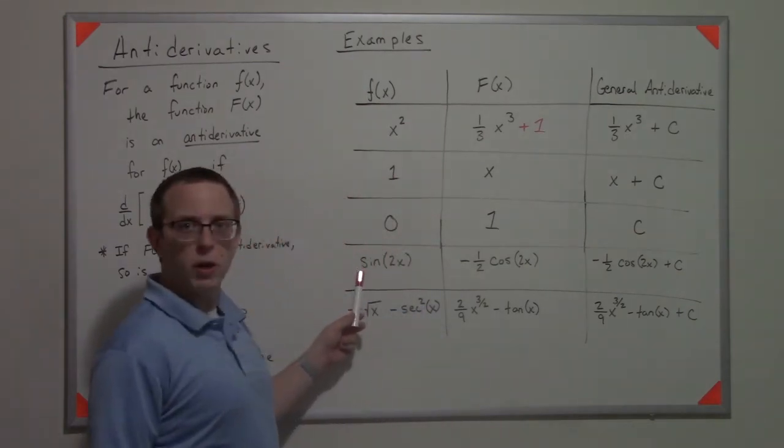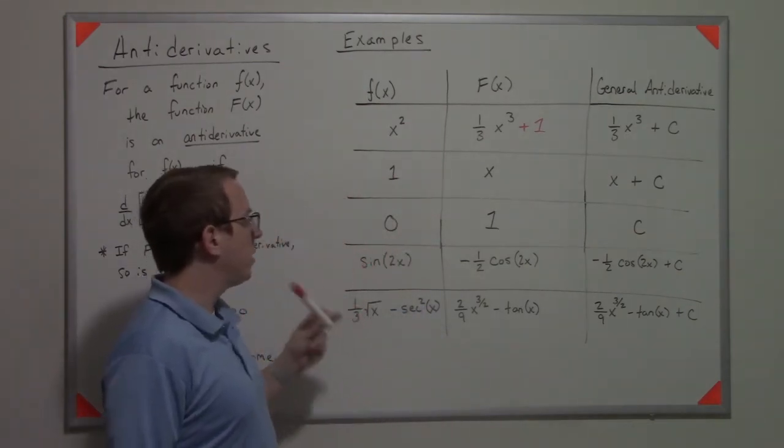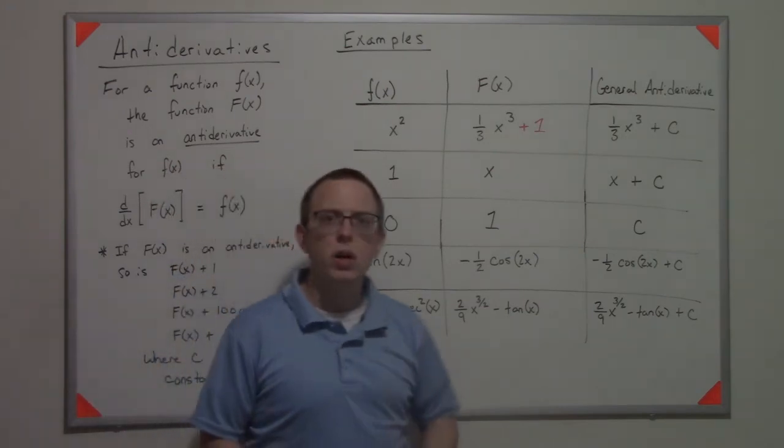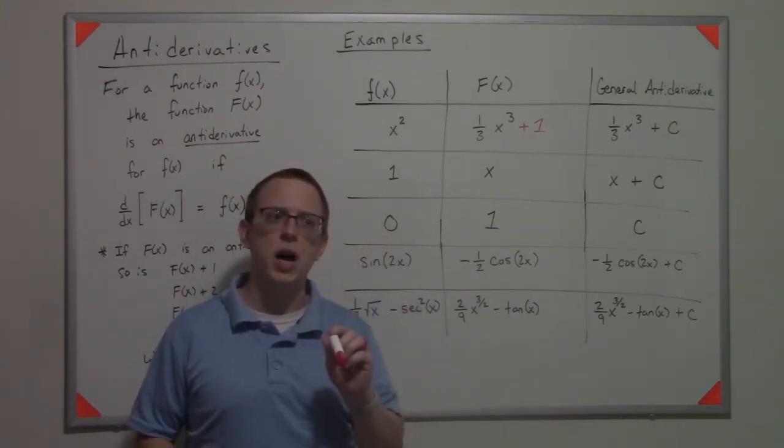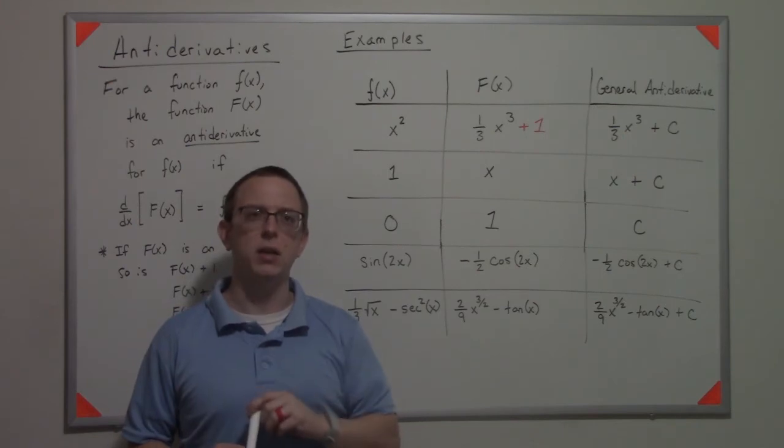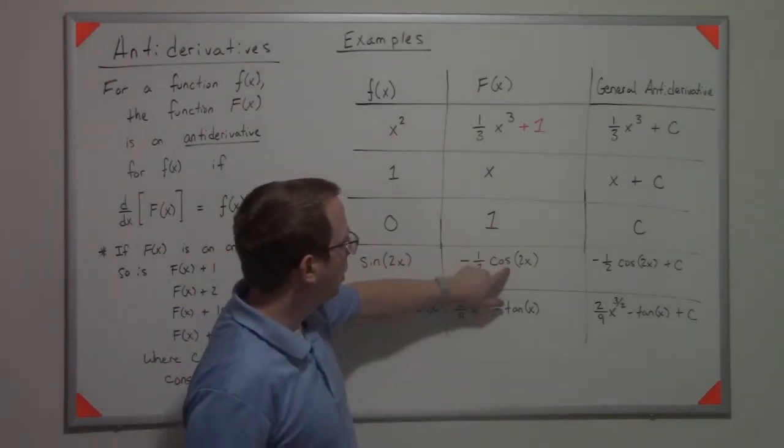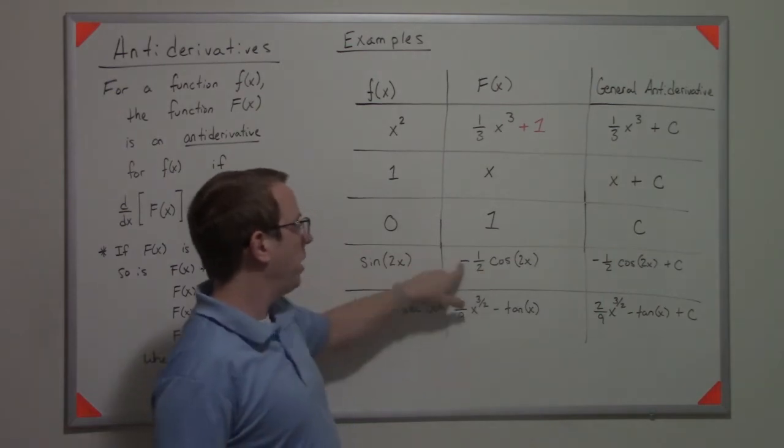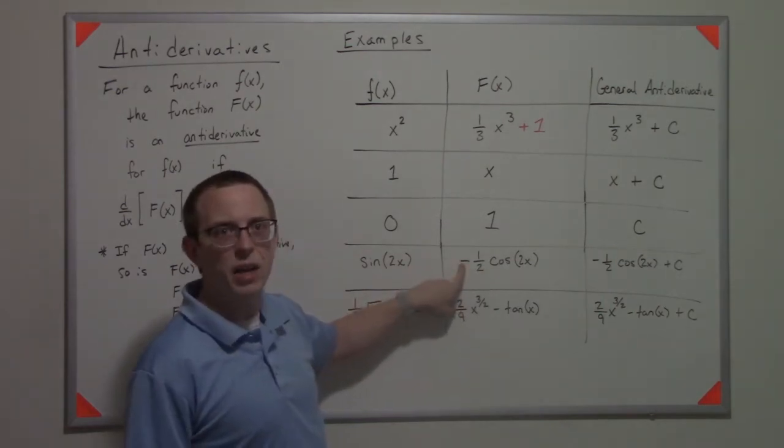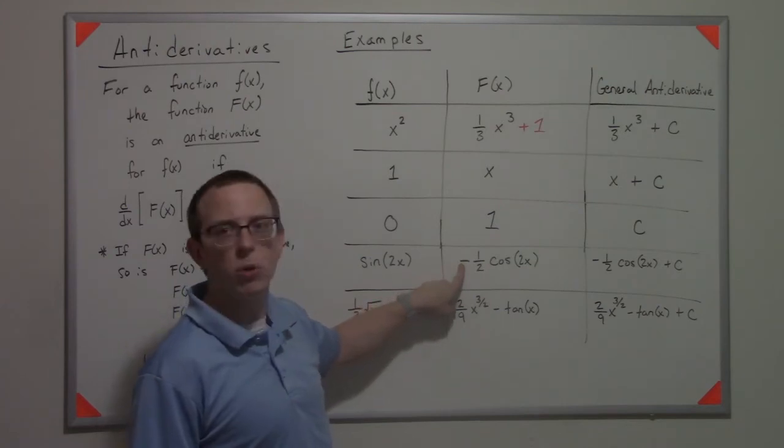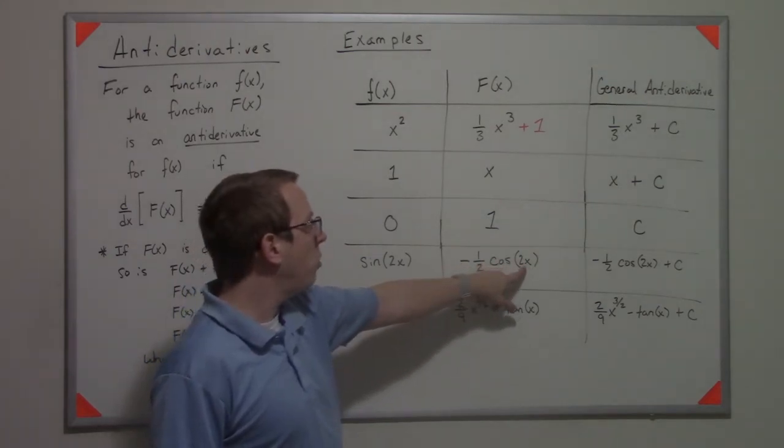The next one's a little trickier: we have sin(2x). Now I know that the derivative of cosine is negative sine, so if I started with a cosine I would get a negative, so I have to add that negative on just to make sure that I get that proper cancellation.